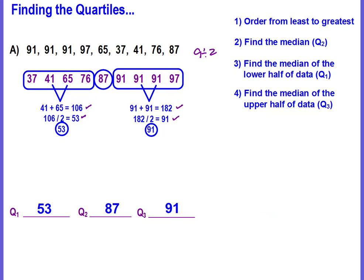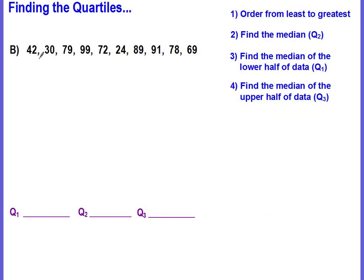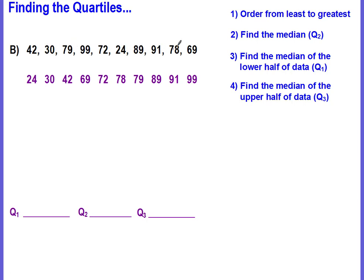Let's do another one. Again we start with our data set and order from least to greatest. How many pieces are in our data set? There are ten. If we divide ten by two, we get five.